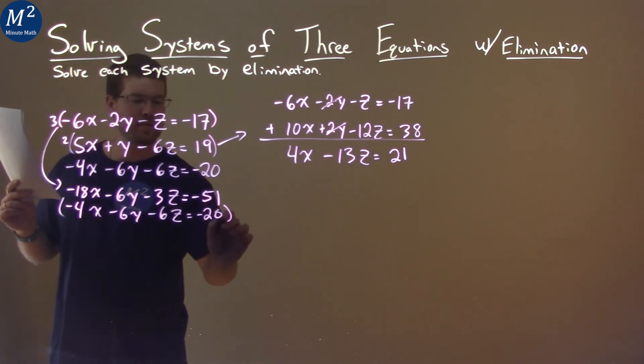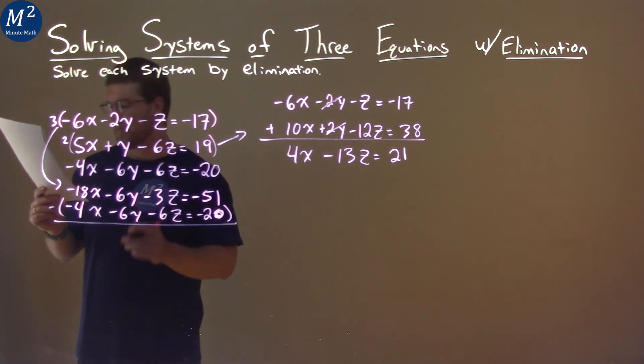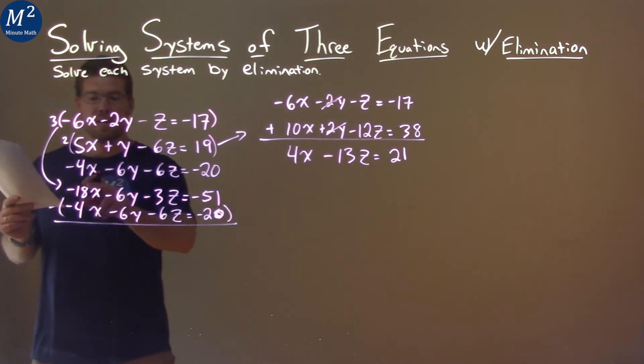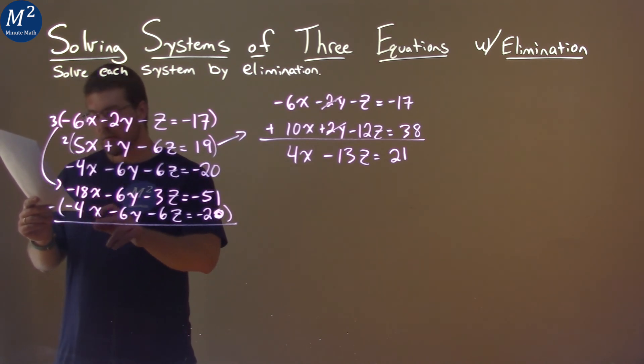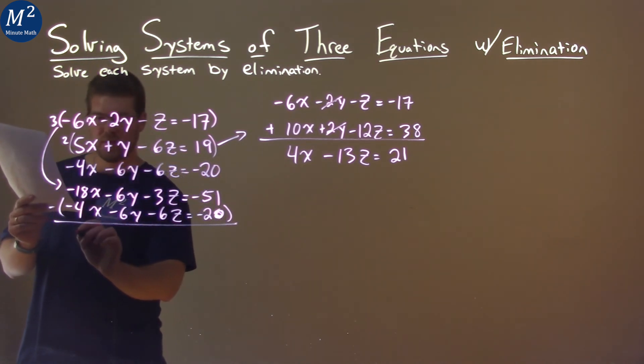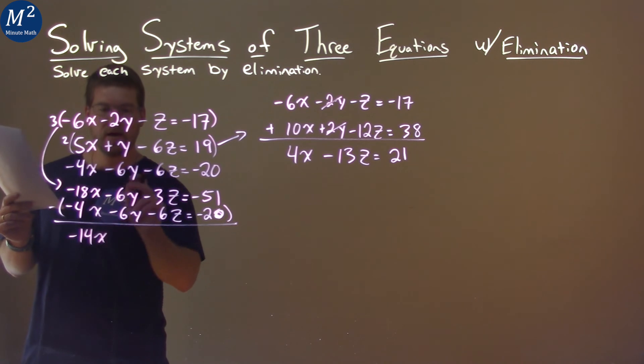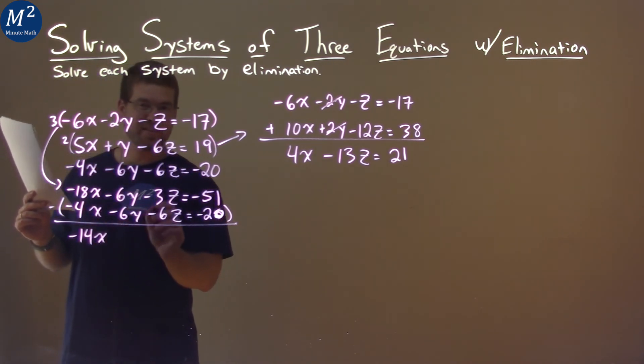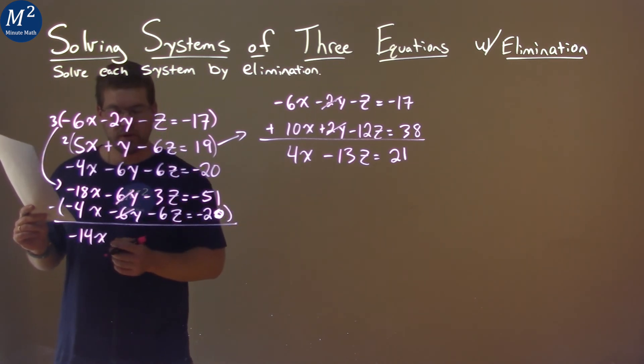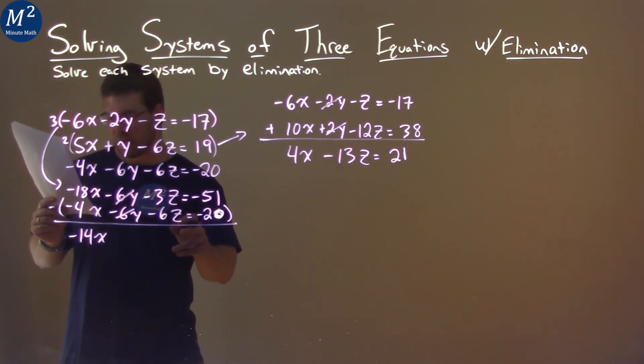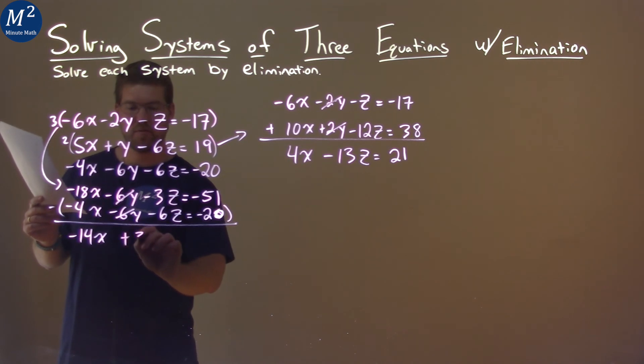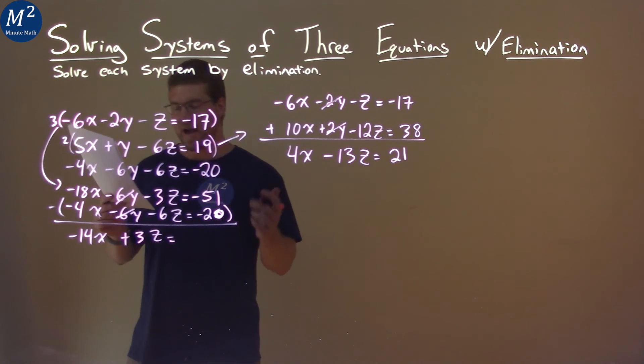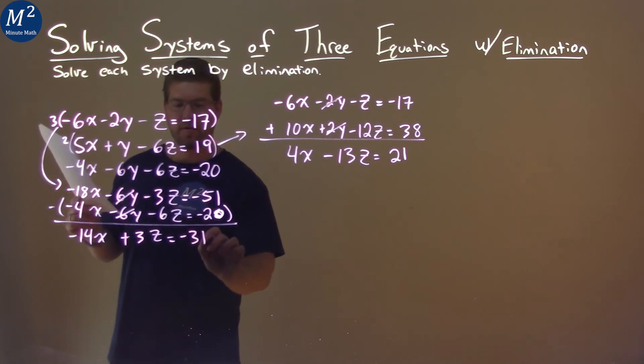I now can subtract these two equations and we'll eliminate that 6y. Negative 18x minus negative 4x is like adding 4x, we have negative 14x here. Negative 6y minus negative 6y is like adding 6y, cancel the 6y's out. Negative 3z minus negative 6z is like adding 6z, and we have 3z here left over. And then we have negative 51 minus negative 20 is like adding 20, it's negative 31.